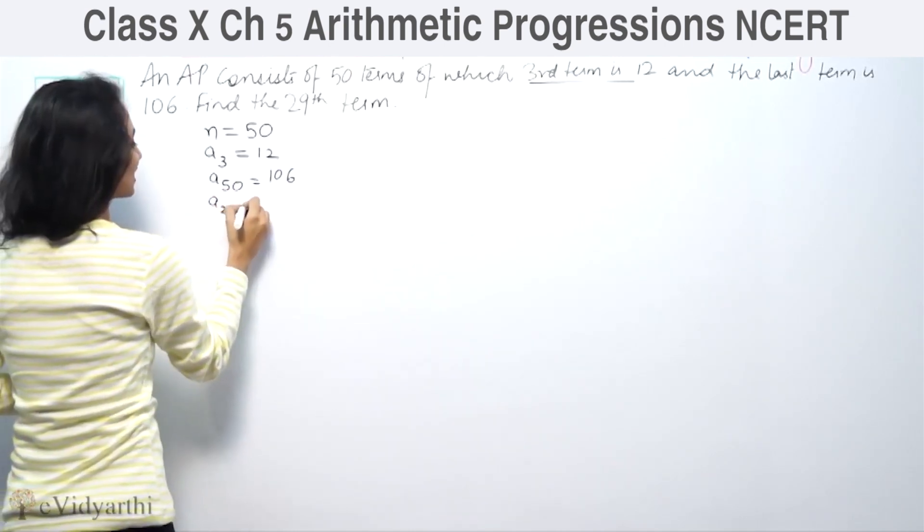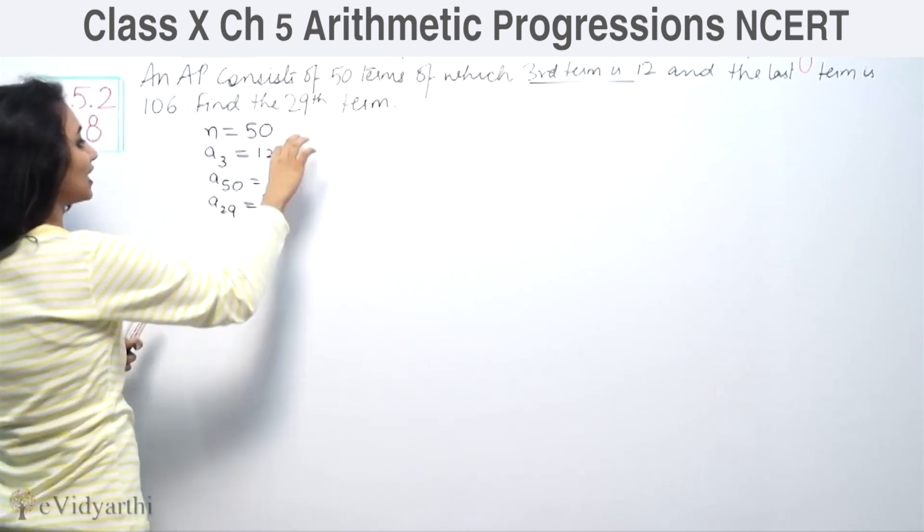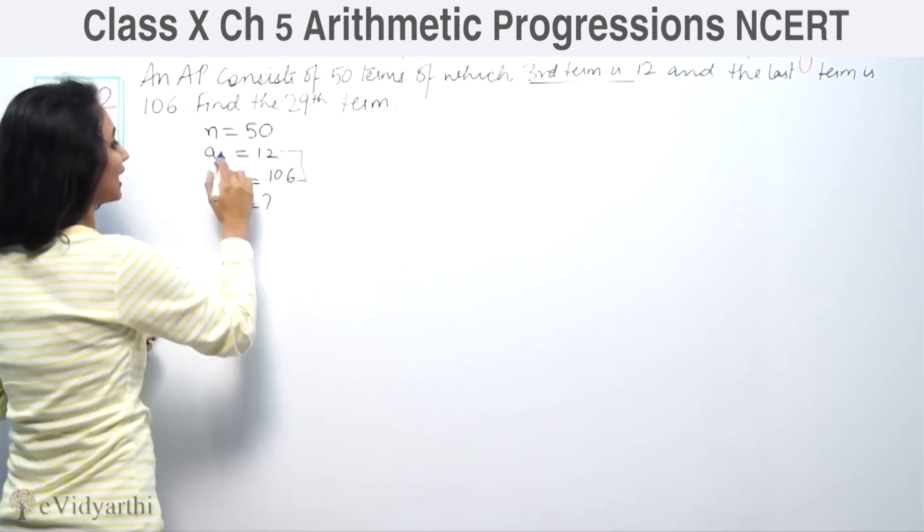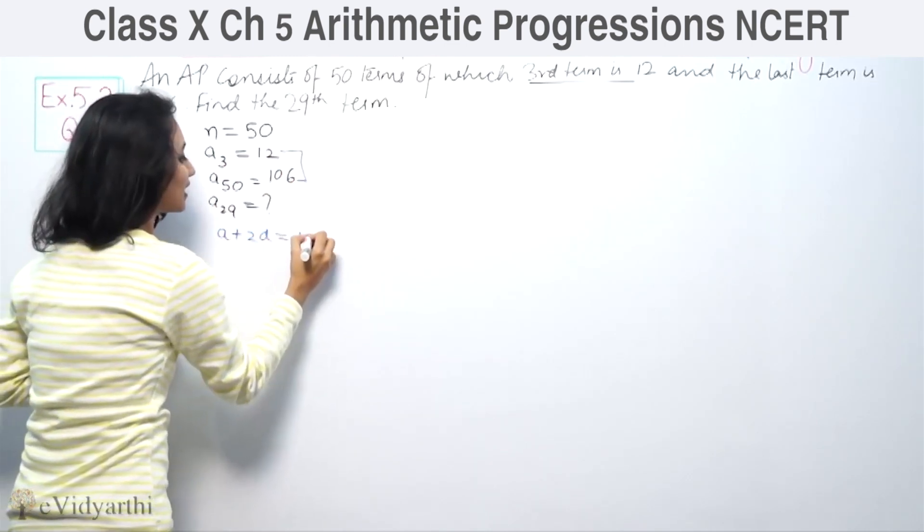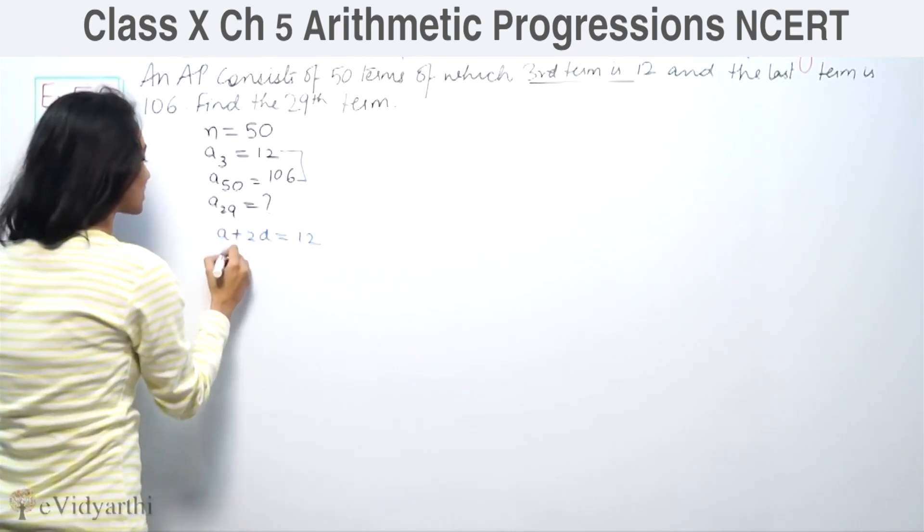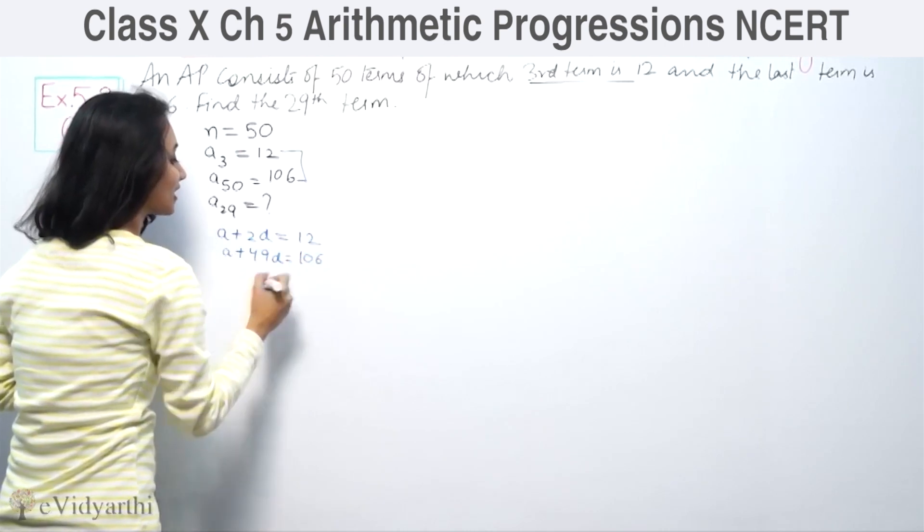We will find the 29th term. So first of all, we can use these two things. A3 comes as A plus 2D equal to 12. A50 comes as A plus 49D is equal to 106.